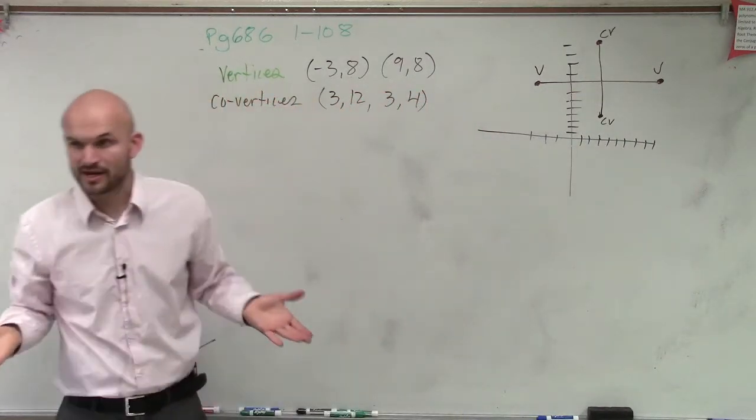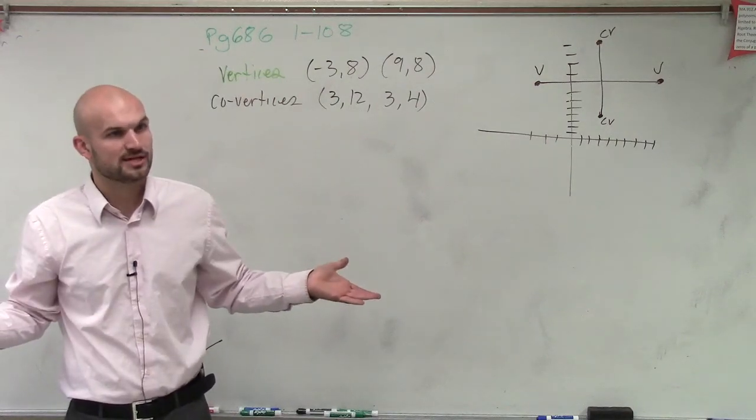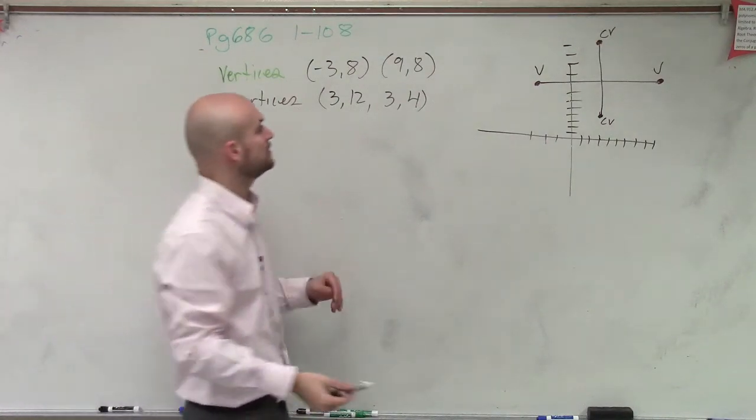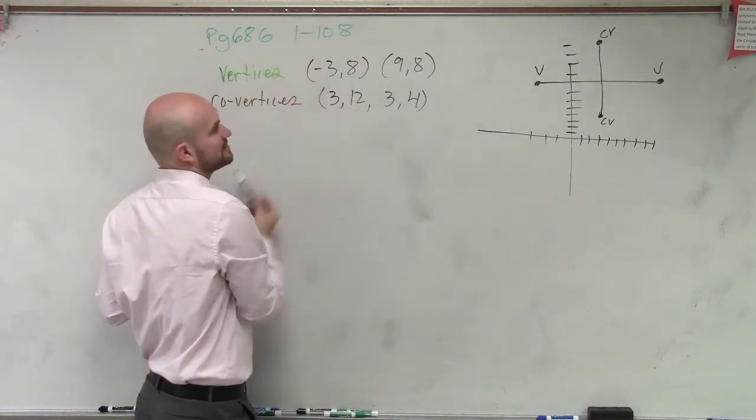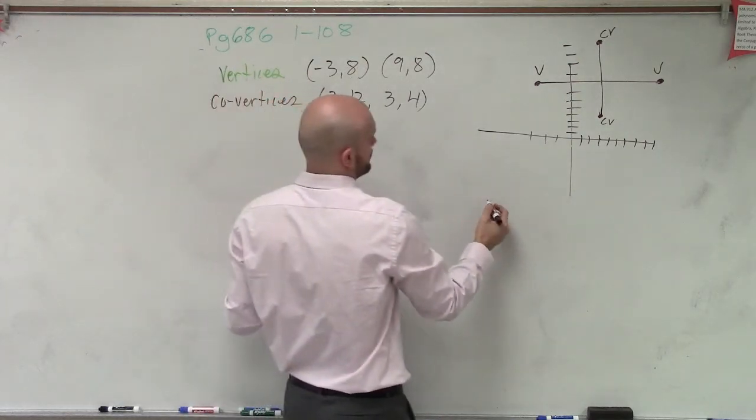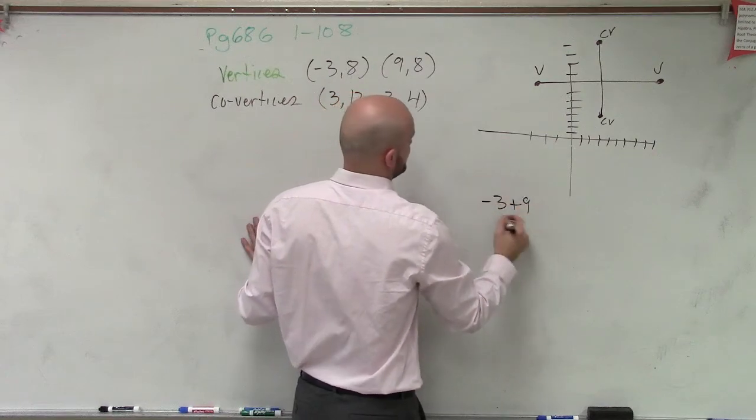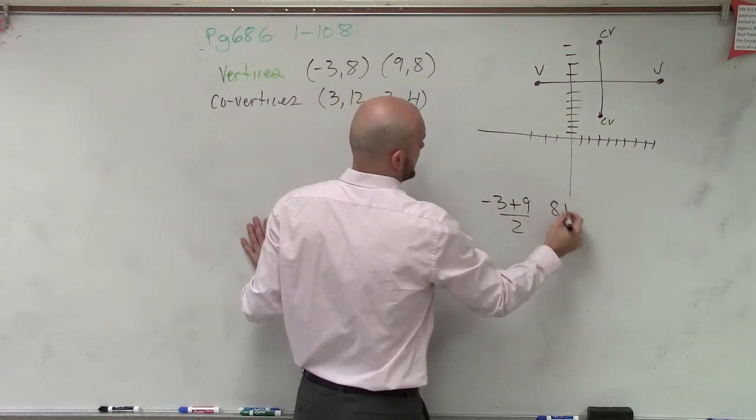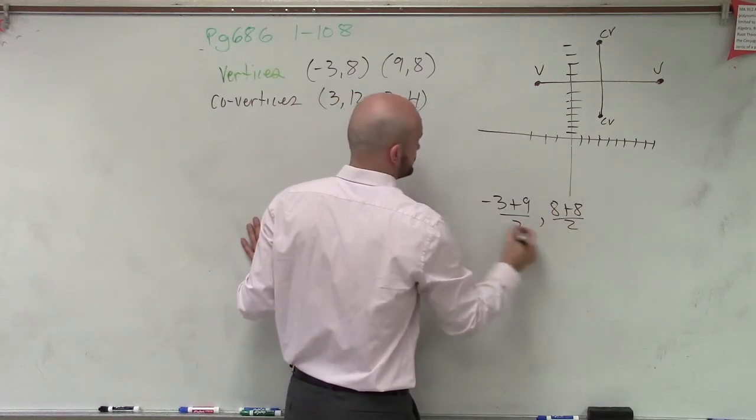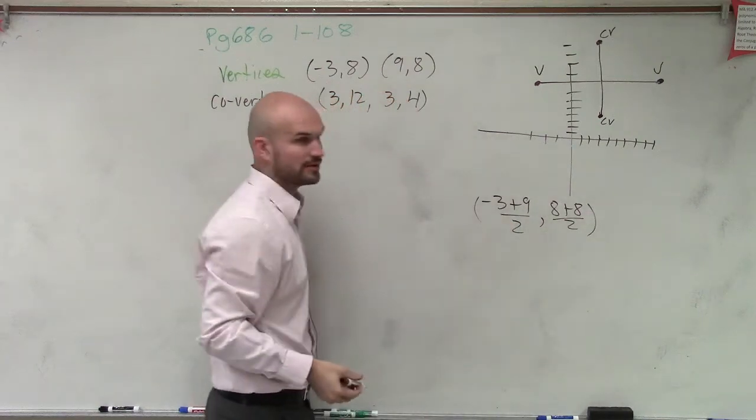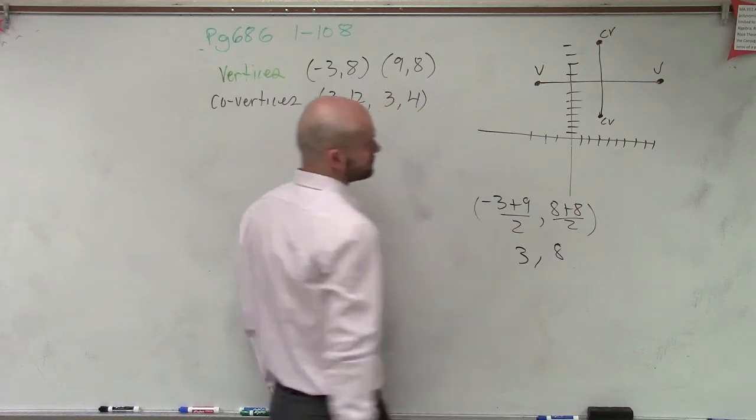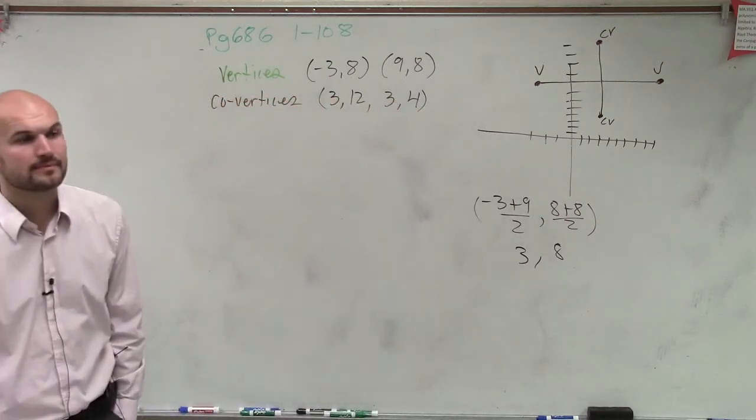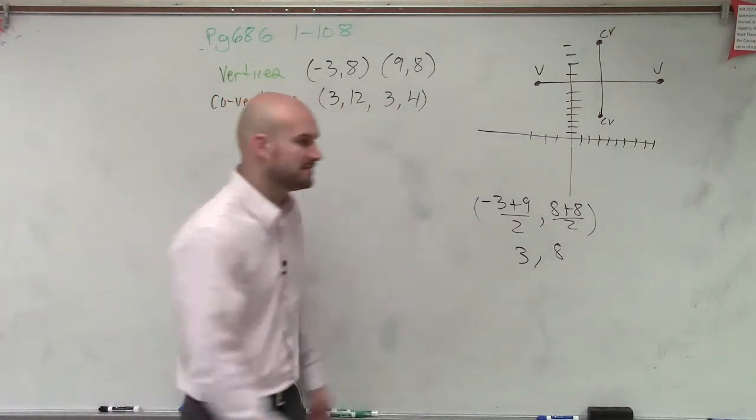So we need to find the midpoint, right? You could use the midpoint formula to help you out. But you could easily just find the midpoint of these two, right? Negative 3 plus 9 divided by 2. 8 plus 8 divided by 2. Find the midpoint. Anybody? Buehler? Buehler? 6. So it's 3, 8.